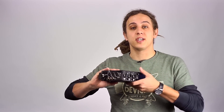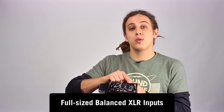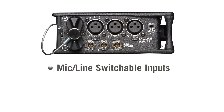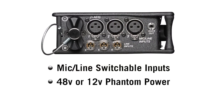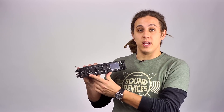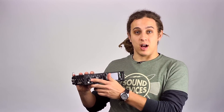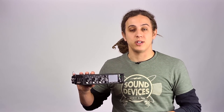On the input panel of the 633, we have 3 full-sized XLR inputs. These inputs 1 through 3 are mic/line switchable and contain 48 volts or 12 volts phantom power. Input 1 can accept an AES 42 or AES 3 digital input. Inputs 1 through 3 contain their own dedicated front panel trim knob, fader knob, continuously variable pan, and PFL switch.